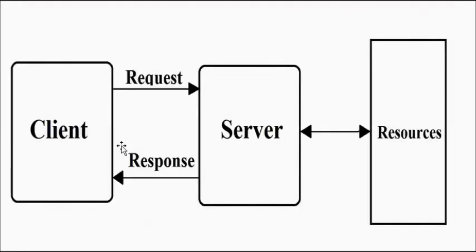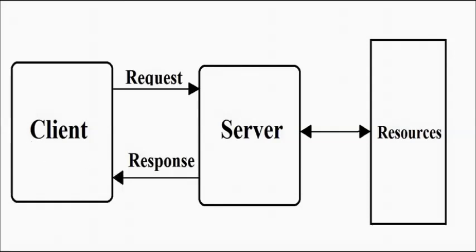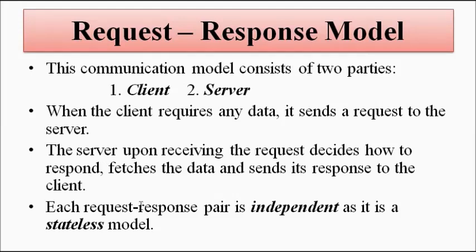This is the block diagram of the request-response model. The client requests the server, sending a request for particular data or information. The server checks the resources, whether the particular data is available or not, then sends all the related relevant data and sends the response back to the client. Another important characteristic of the request-response model is that each request-response pair is independent — they are stateless. That is an important characteristic of the request-response model.